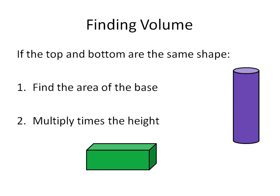You're going to use that when we look at triangular prisms, rectangular prisms, cylinders, and also today with cubes. Anything where the base on the bottom and the base at the top are the same — we often call those base 1 and base 2 — when they're the same, you can just find the area and multiply it times the height, and that'll give you the volume.